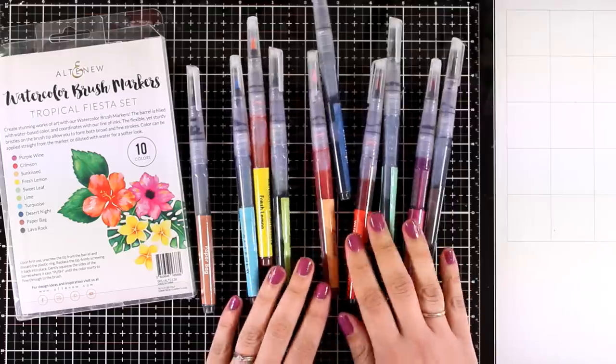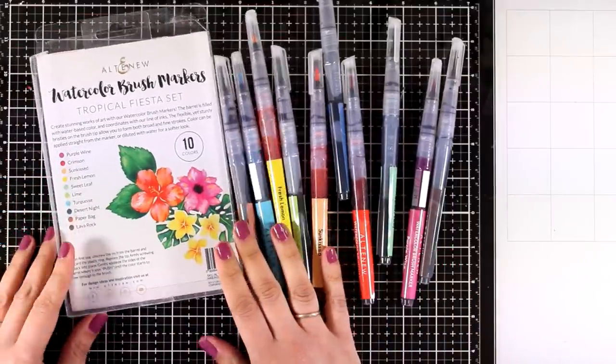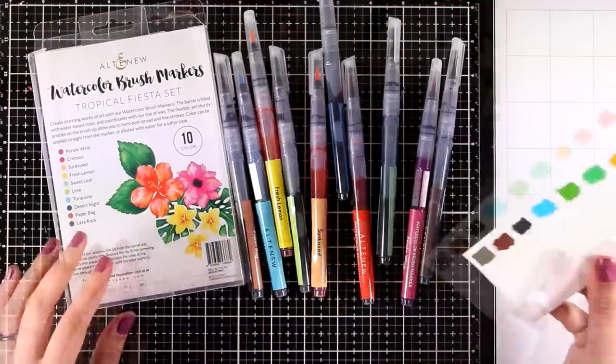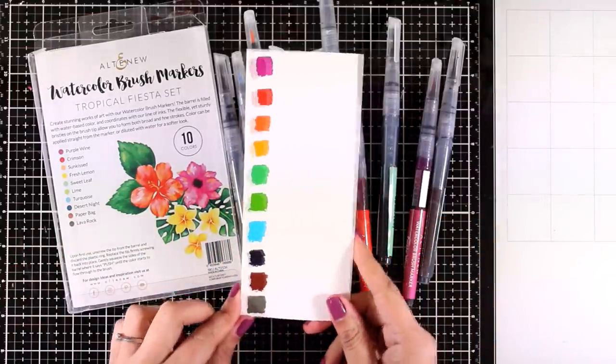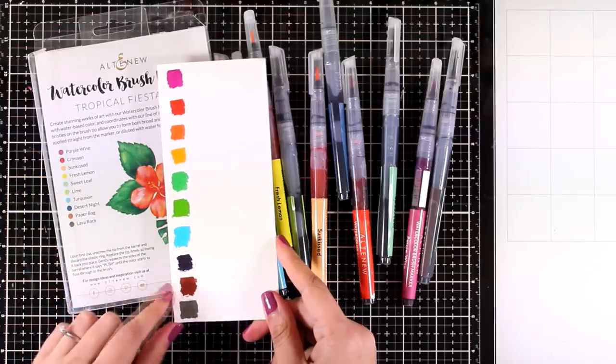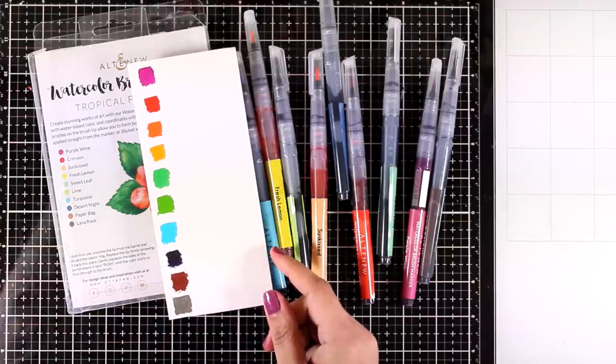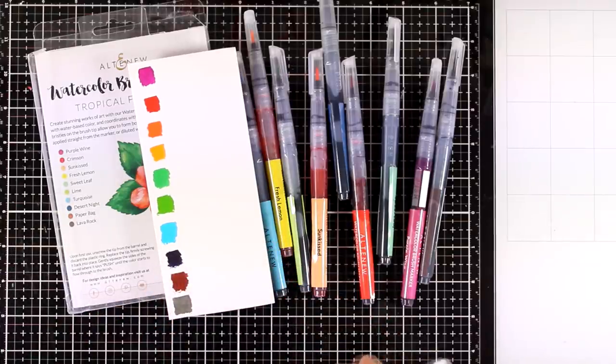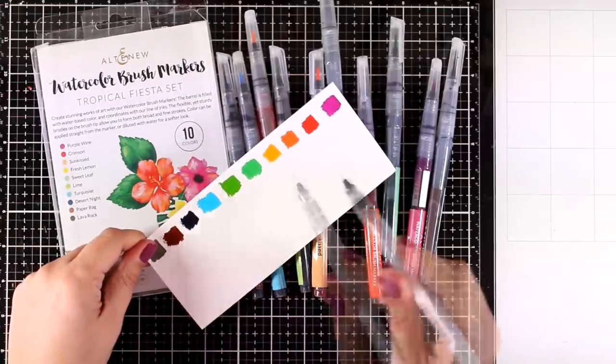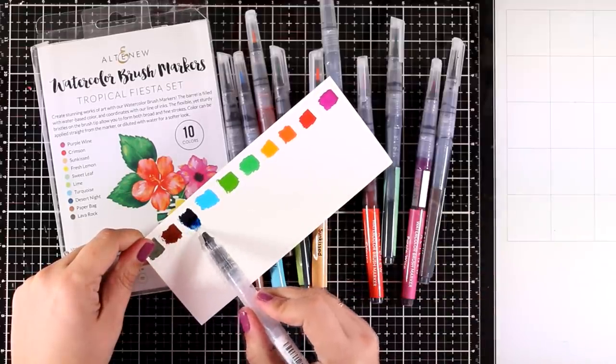It comes with 10 colors. It has a good range of colors all the way through the rainbow colors and I'm going to show you here a swatch where you can see how nice and vibrant all those colors are, hence the name Tropical Fiesta. These colors are a great addition to the other two sets that Altenew already has, but if you don't have any sets you will see that with these colors you have a lovely palette to start with.